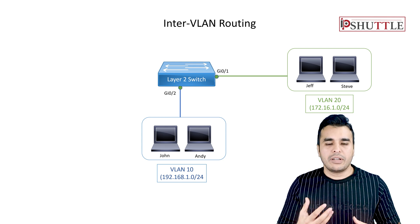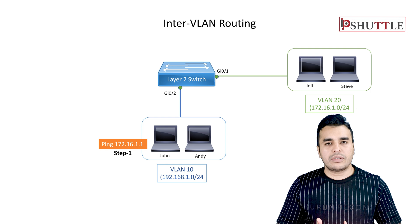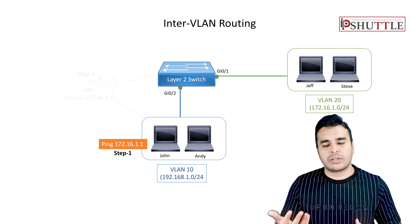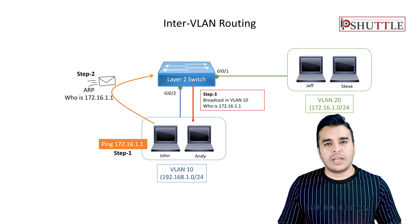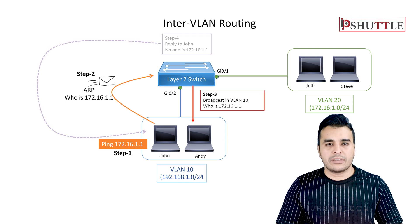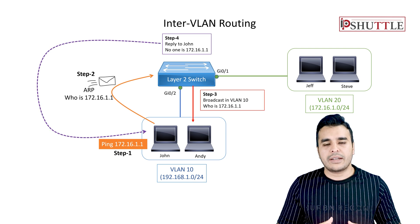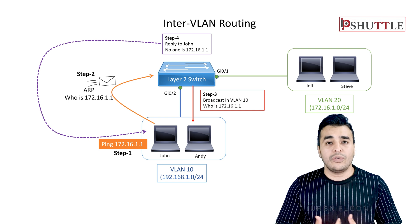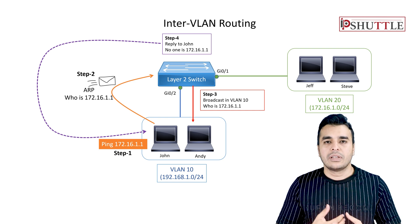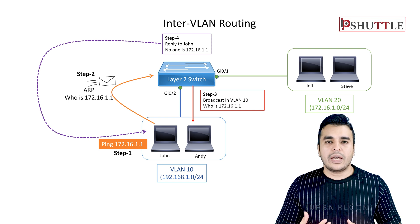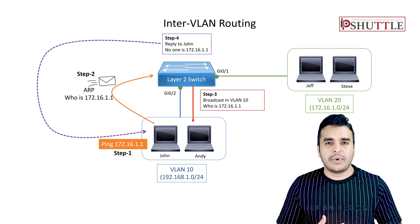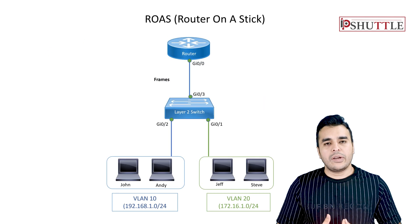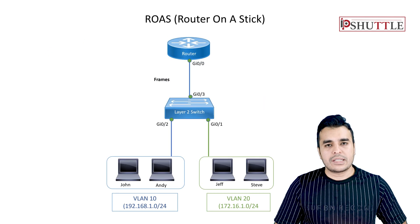If you try to ping from 192.168.1.1 to the other side, you will not be able to, but inside VLAN 10 or inside VLAN 20 you will be able to communicate. This is where inter-VLAN routing comes in. Inter-VLAN routing is achieved by three different scenarios — we will do the labs one by one. The first scenario is router on a stick.